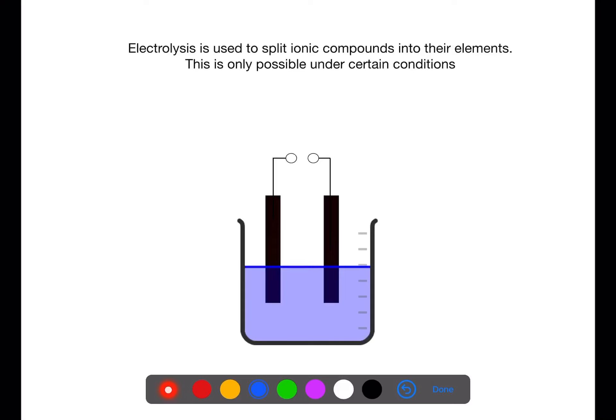Electrolysis is used to split up ionic compounds into their elements. This is only possible under certain conditions. Let's look at this diagram.